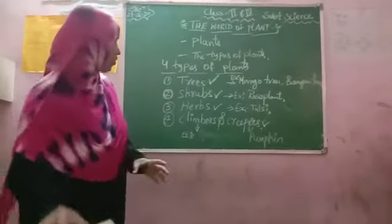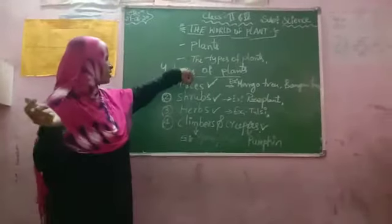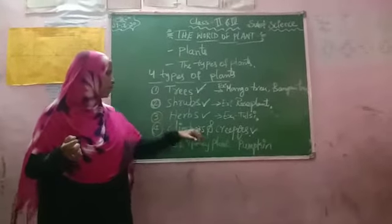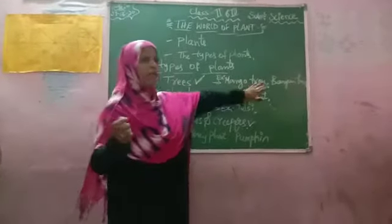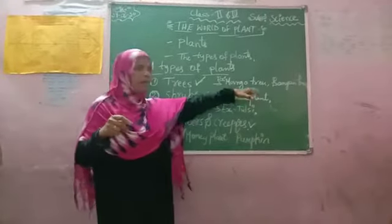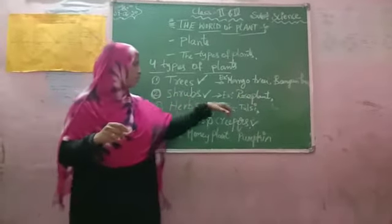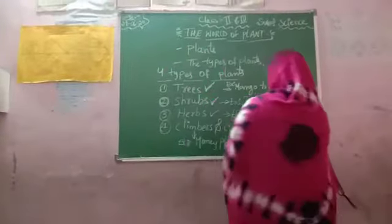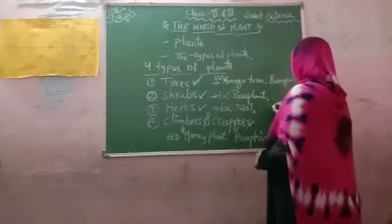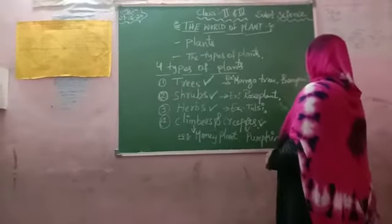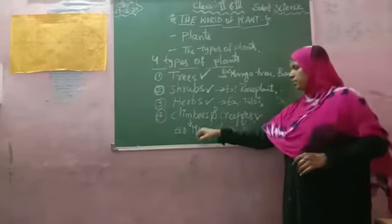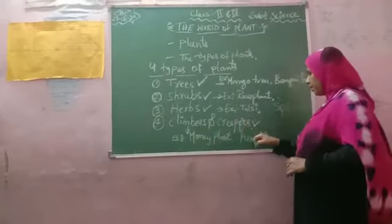Let's revise. Plants are of four types: trees, shrubs, herbs, climbers, and creepers. Trees include mango tree, banyan tree, neem tree, and coconut tree. Shrubs include rose plant and money plant. Herbs include tulsi and spinach. Climbers include money plant and creepers include pumpkin.